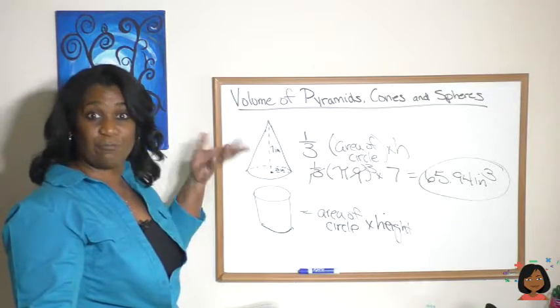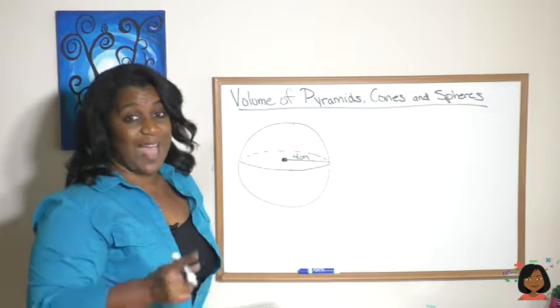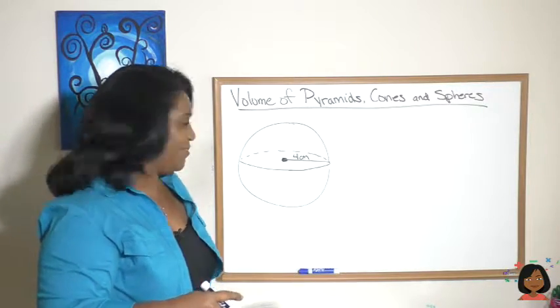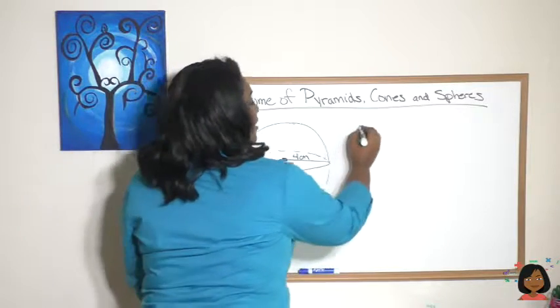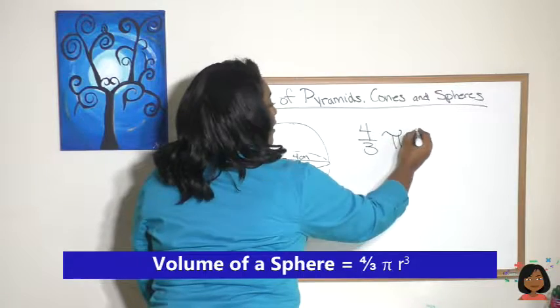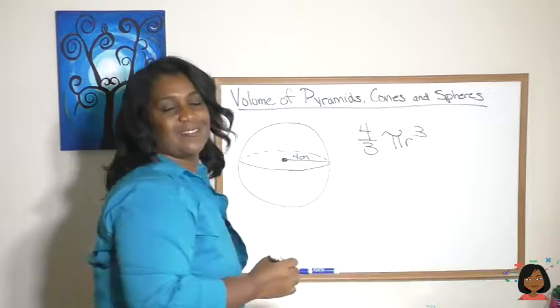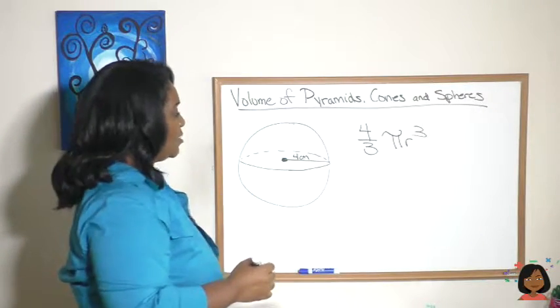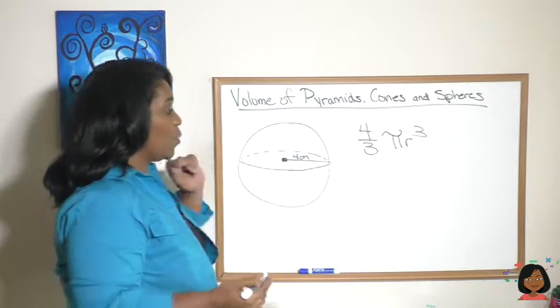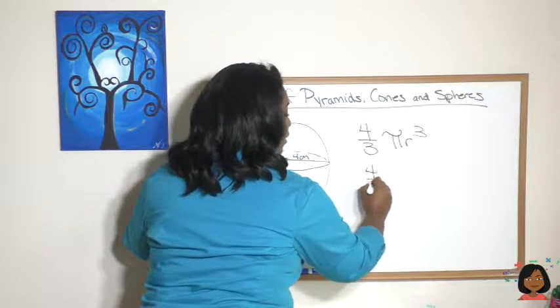Finally, our last one is the volume of a sphere. This one I'm just going to give you the equation or the formula. It is 4/3 π r³. Okay, this is the first time we've seen this one, so let's go ahead and fill in with our numbers.